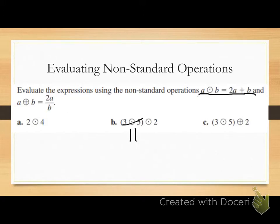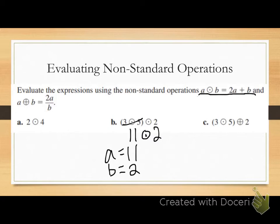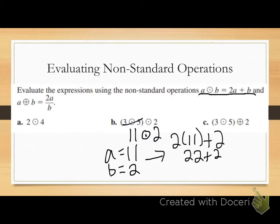Now this problem turns into 11 circle-dot 2. Once again, I'm using the operation that has the circle-dot in it — 2a plus b. My a value is 11 and my b value is 2. Plugging those in, I get 2 times 11 plus 2. 2 times 11 gives me 22, and then 22 plus 2 gives me 24. So evaluating this whole expression on letter b, I get the number 24.